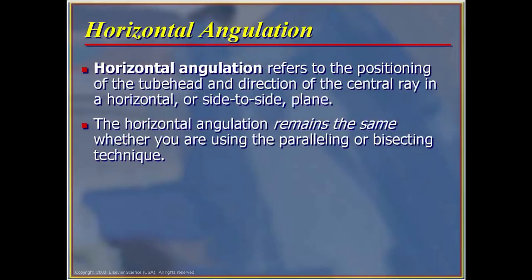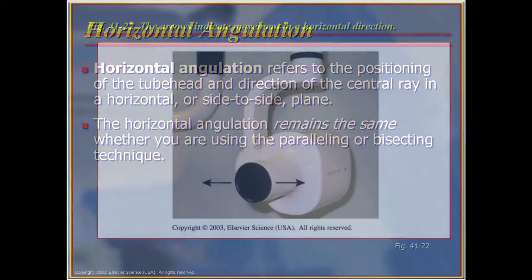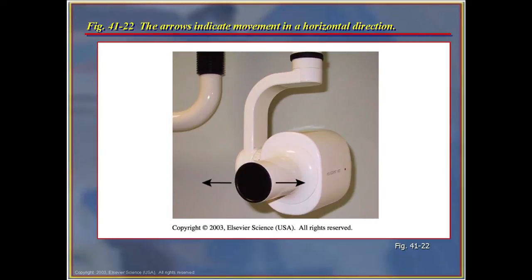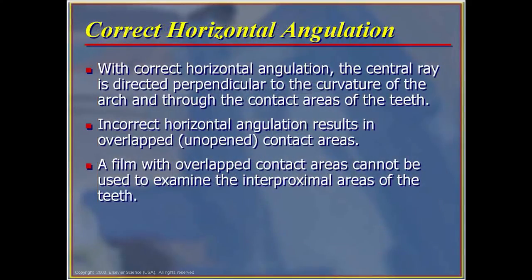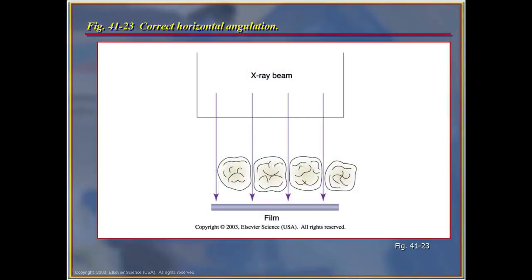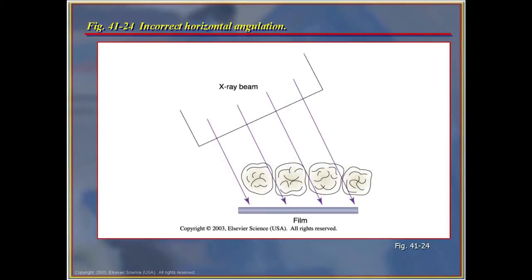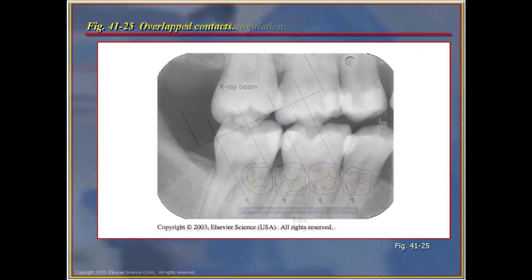Horizontal angulation refers to the positioning of the tube head and the direction of the central ray in a horizontal or side-to-side plane. The horizontal angulation remains the same whether using paralleling or bisecting techniques. With correct horizontal angulation, the central ray is directed perpendicular to the curvature of the arch and through the contact areas of the teeth. Incorrect horizontal angulation results in overlapping or unopened contact areas; a film with overlapping contact areas cannot be used to examine and diagnose interproximal caries or disease.